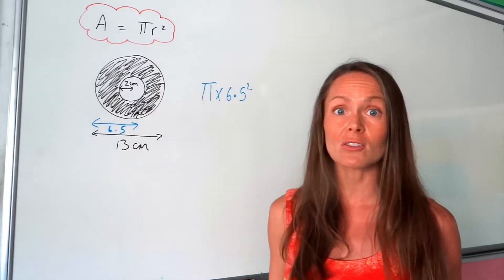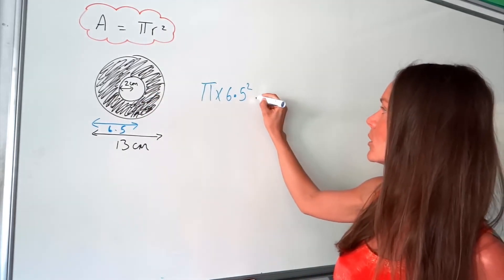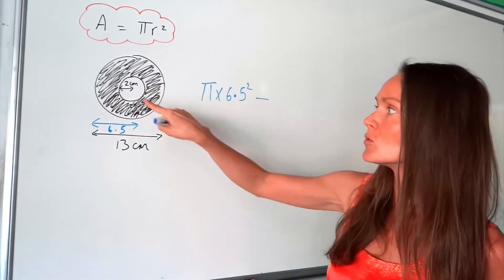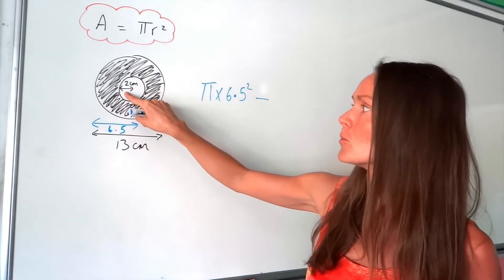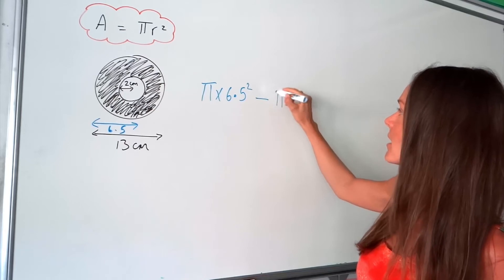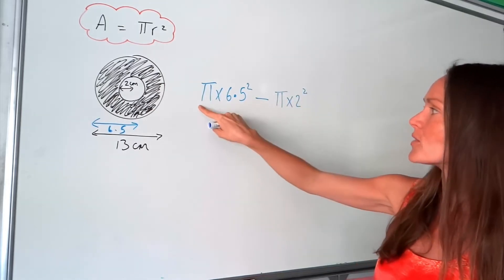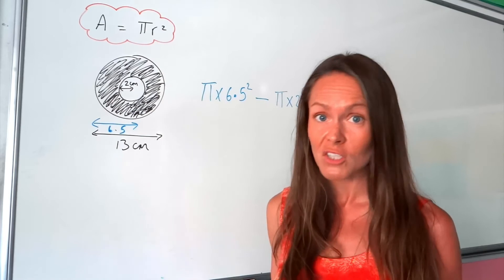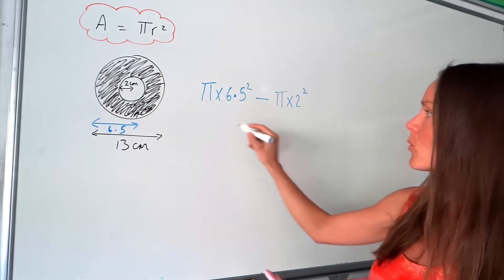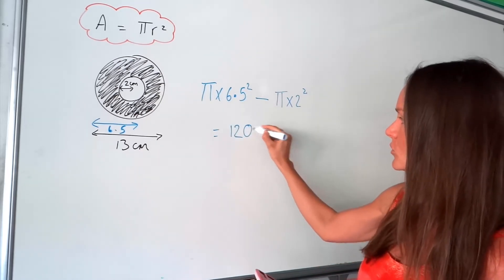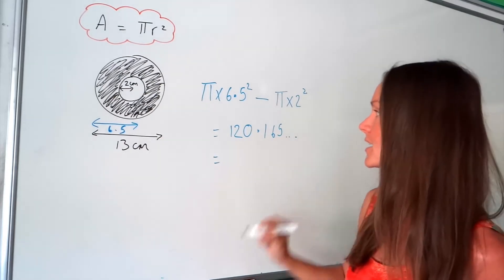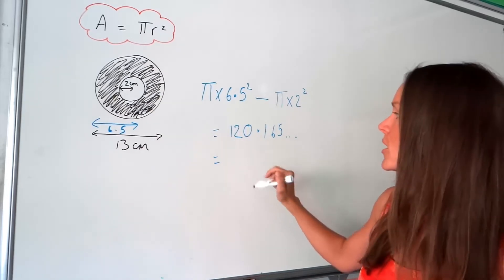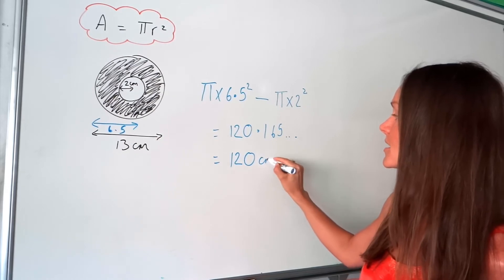Now, remember, we're going to subtract the smaller circle. So we do minus the area of the small circle. The small circle already has a radius of 2, so we write pi times 2 squared. So we've got the area of the large circle minus the area of the small circle, which gives the shaded area. Put that in your calculator and you get 120.165... Rounding to three significant figures: 1, 2, 3 — the 1 doesn't round the 0 up — so we're left with 120 cm².